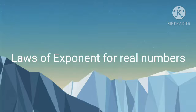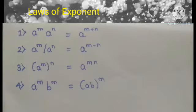Next, we will see the laws of exponents for real numbers. Archimedes invented the laws of exponents. First law: a raised to m into a raised to n equals a raised to m plus n. Here, a is the identical base and m and n are the exponents. Second law: a raised to m divided by a raised to n equals a raised to m minus n.